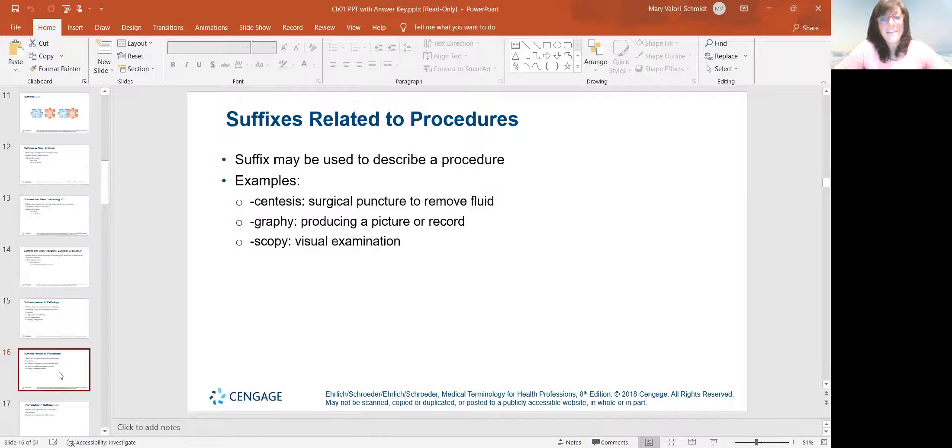And then suffixes can be procedures, like we talked about plasty. There's centesis, means we're putting a needle in to remove fluid. Graphy, radiography, it's taking a picture or some kind of a record of something. And then it's pronounced scopy, like visual examination of. So a bronchoscopy is we're using a scope to go in and visually examine the bronchus of the lungs.